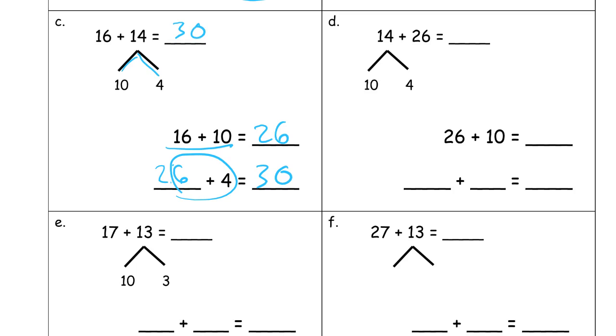Here's 14 plus 26, breaking up the smaller number. Add the 10 to the 26. 36. Then we're gonna add the rest of that number bond, the other part, to the 36. 36 plus 4. You'll see the same thing again, the same 6 plus 4, but now we have 3 tens. 36, and we're gonna have one more 10. 40.